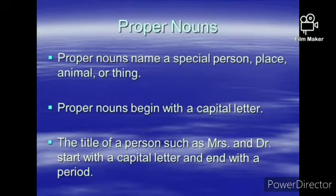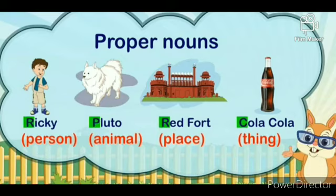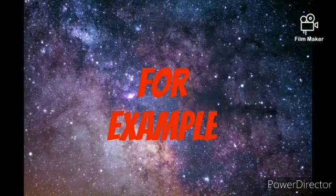Now we will learn about proper noun. Proper noun names a specific person, place, animal or thing. Proper nouns begin with a capital letter — always remember, proper nouns start with a capital letter. The title of a person, such as Mrs. and Doctor, starts with a capital letter and ends with a period. Like person: Ricky. Animal: Pluto. Place: Red Fort. Thing: Coca-Cola. All are in capitals. Proper nouns are always capital.